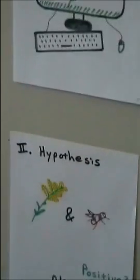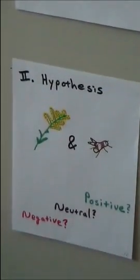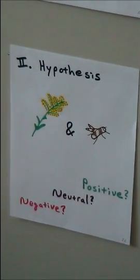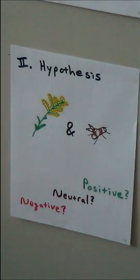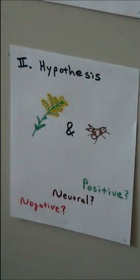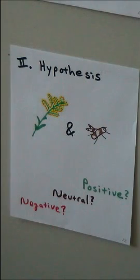In the second phase, lab teams will choose one of three hypotheses to test — that the gall fly's presence has a positive, neutral, or negative effect on the goldenrod plant. Each team will also develop their own written field and lab methods to test that hypothesis. The class will discuss the pros and cons of each team's methods and agree on a single set of methods, which will be used by all teams to test their hypothesis.